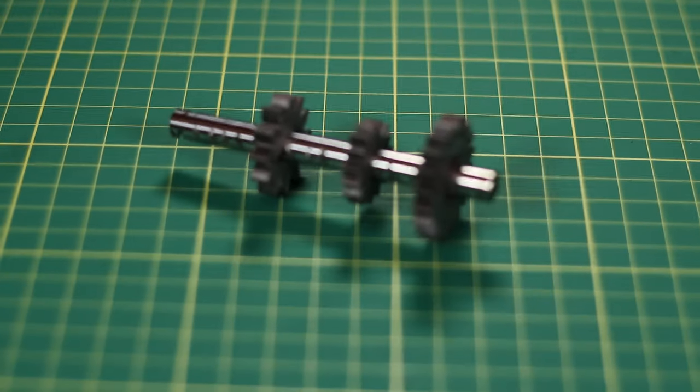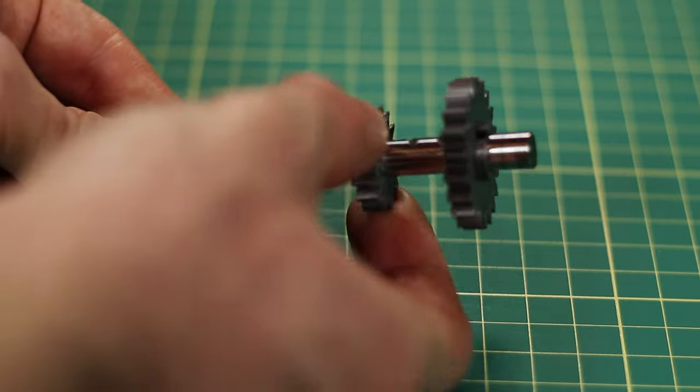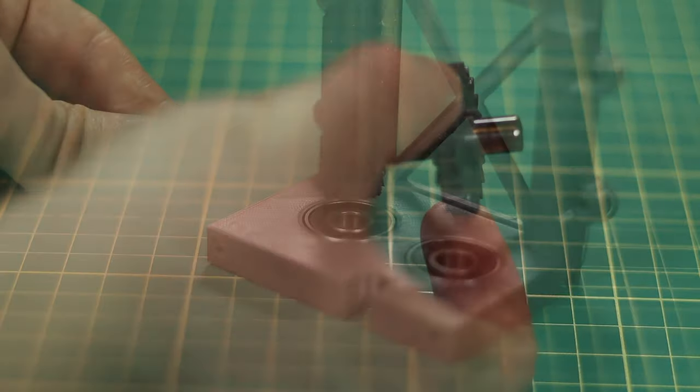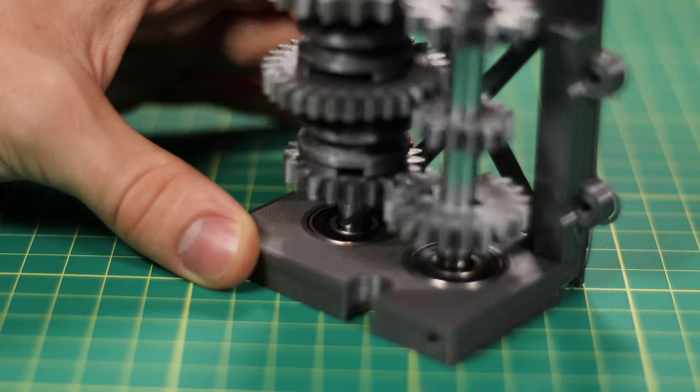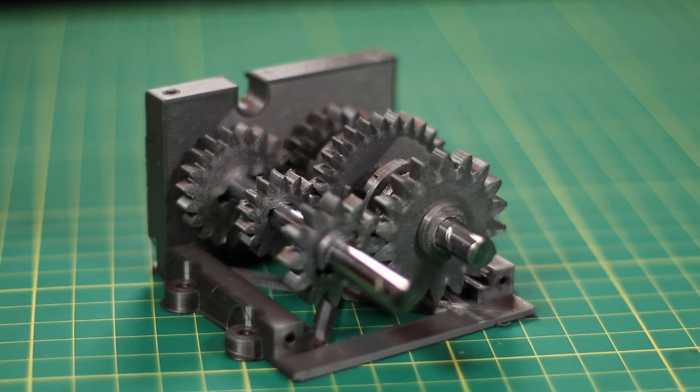Now the input shaft is a little simpler because all of the gears are fixed to it and will spin at the same speed. As I'm dropping the shafts into the bearings here, it seems like everything is fitting together, so now I can go onto the stage of gluing all the parts together.